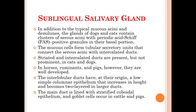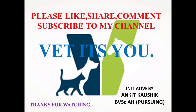The main duct of the sublingual salivary gland is lined with stratified cuboidal epithelium, and goblet cells occur only in the case of cattle and pigs. This is an important characteristic feature of the main duct which helps in distinguishing it — that goblet cells in the main duct of the sublingual salivary gland are found only in cattle and pigs.